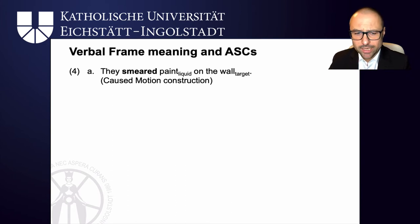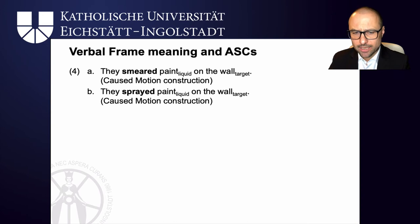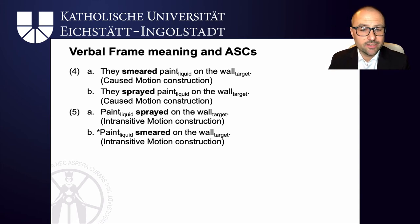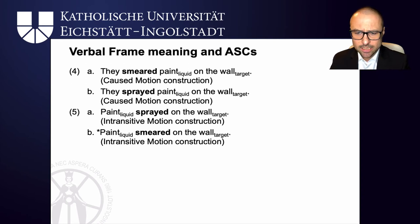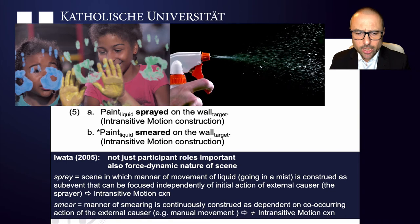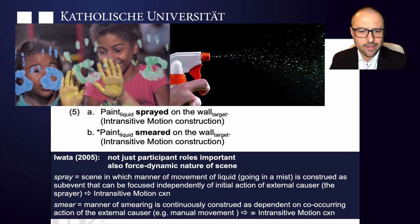You can have they smeared paint on the wall in the caused motion construction, and you can also have they sprayed paint on the wall using the caused motion construction. In both situations, the subject actively causes the theme to end up on the wall. But paint sprayed on the wall in the intransitive motion construction works, while paint smeared on the wall doesn't. The intransitive motion construction doesn't work for smear. As Yawata points out, the force dynamic nature is important: in spray, the manner of movement of the liquid going on in mist is construed as a sub-event that can be focused independently of the initial action of the external causer — that's why you can have paint sprayed on the wall.